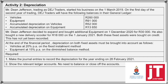Depreciation, activity two. Mr. Dean Jefferson, trading as DEJ Traders, started the business on the 1st of March 2019. On the 1st day of the 2nd year of trading, DEJ Traders will have the following balances in their general ledger. So from the previous activity, which was the 1st year, to now the 2nd activity, we carry forward the balances.